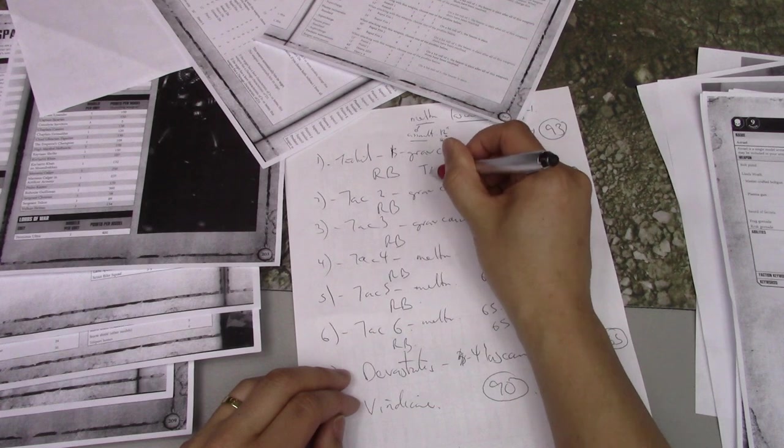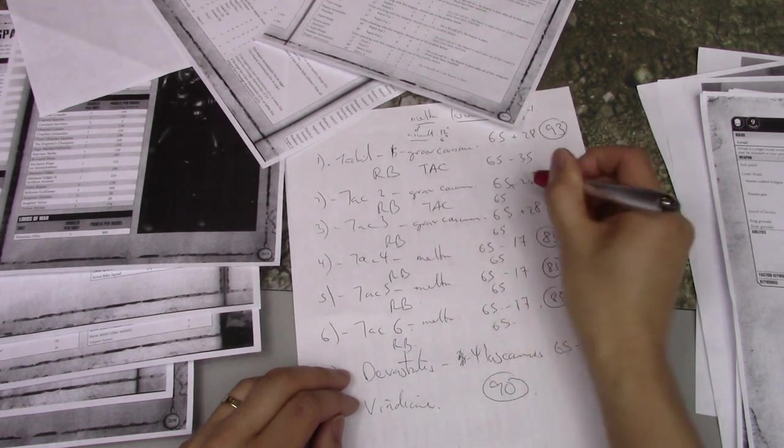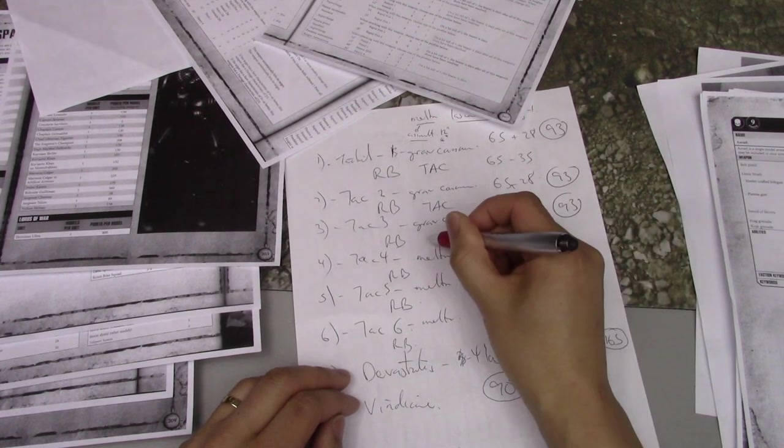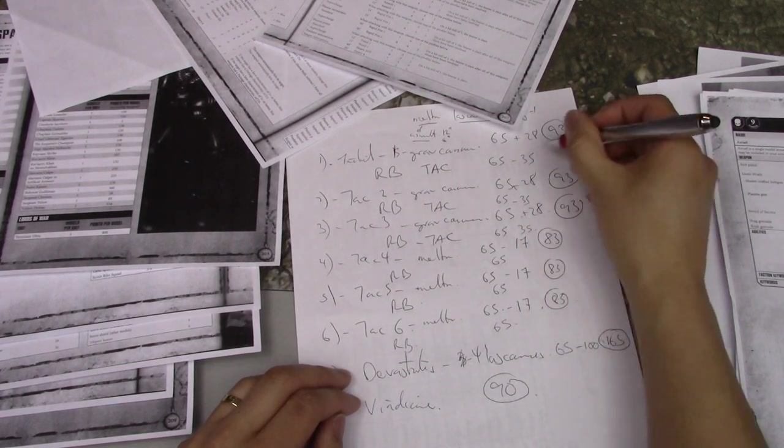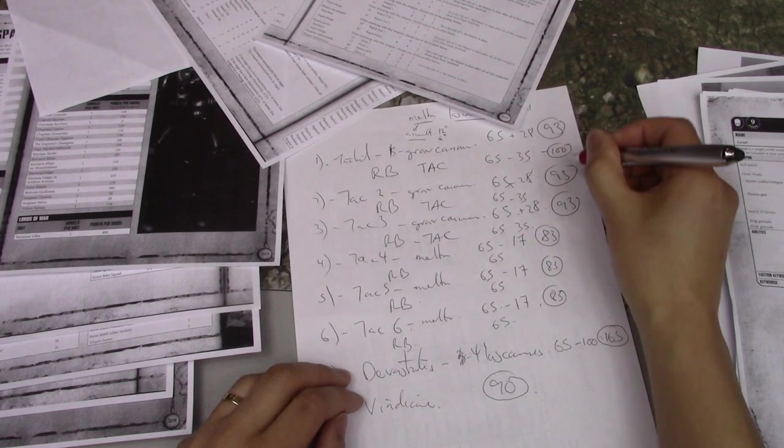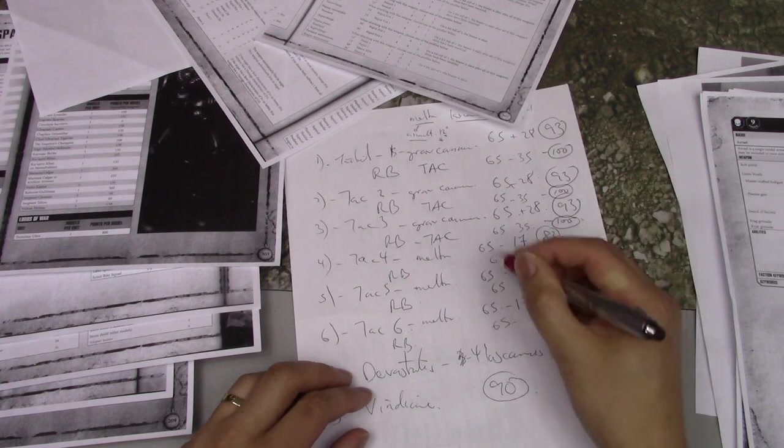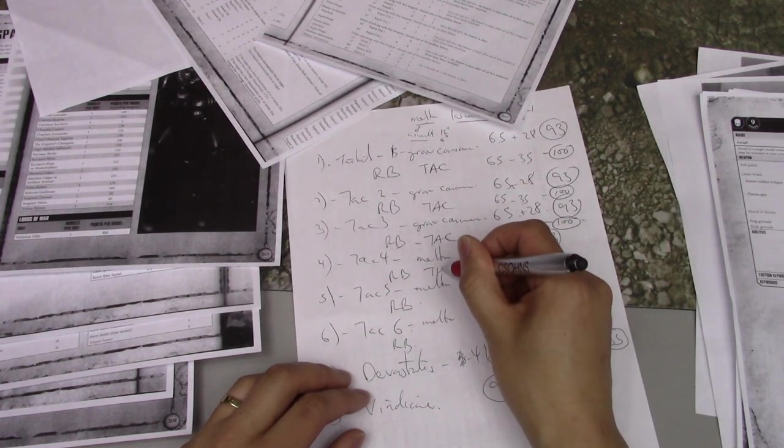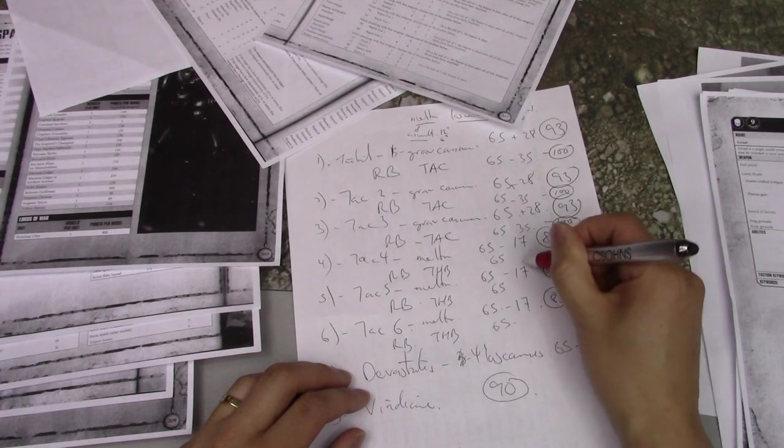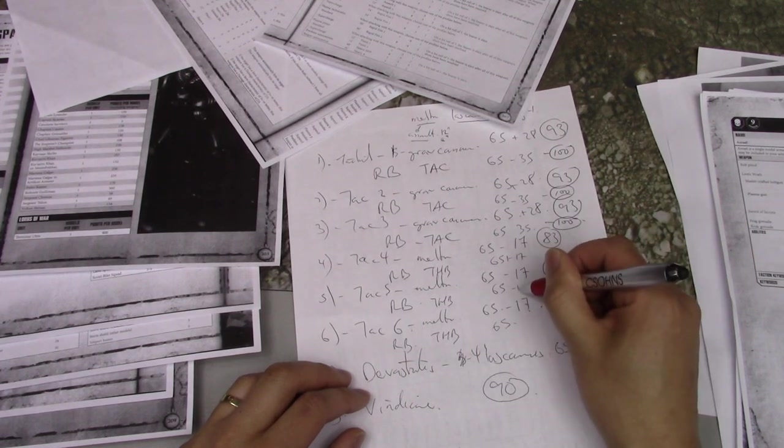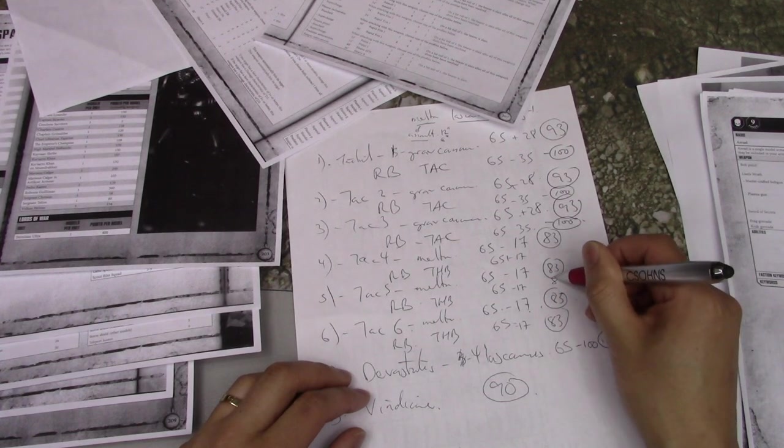So either it's going to be heavy bolters or assault cannons for twice as much, 35 points. At first I went heavy bolters. Then I could bring an extra razorback. But for the price of an extra razorback, I could bring assault cannons. Twin assault cannons - 24 inch, Heavy 12, Strength 6, minus 1, damage 1. That's basically an Avenger Gatling cannon from a knight. Literally, that's the same stats. So I'm totally bringing an Avenger Gatling cannon sitting on top of my razorbacks.